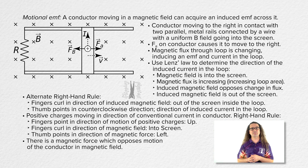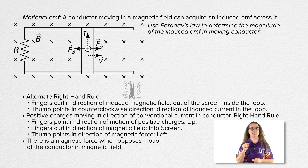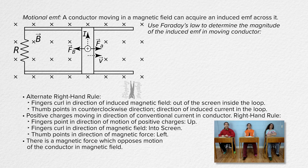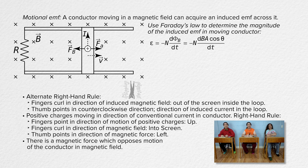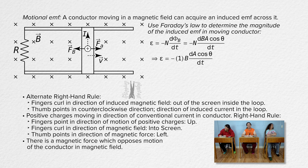Realize you get the same result for negative charges moving opposite the direction of conventional current in the conductor. Now, Bobby, please use Faraday's law to determine the magnitude of the induced EMF in the moving conductor. Faraday's law states that the induced EMF in multiple conductive loops equals the negative of the number of loops times the derivative of the magnetic flux through a single loop with respect to time. Magnetic flux equals the magnetic field times the area of the loops times the cosine of the angle between the magnetic field and the area of the loops. The number of loops in this case is 1. The magnetic field does not change over time, so that can be taken out of the derivative. The angle is also constant over time and can be taken out of the derivative.